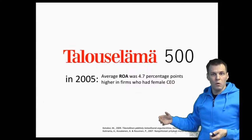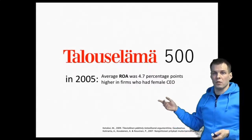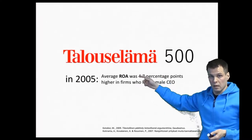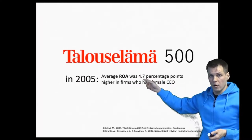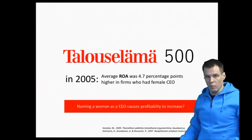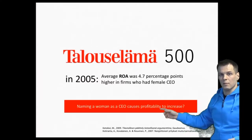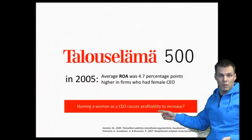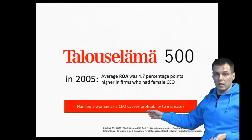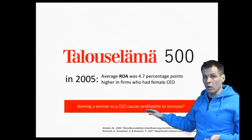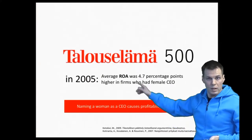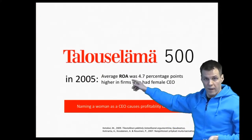The most obvious claim that people want to make with this kind of number is that naming a woman as a CEO causes profitability to increase. So we have a claim with all kinds of policy implications, but that's not the only claim, and it may not be the valid claim that we can make from this fact — this number.